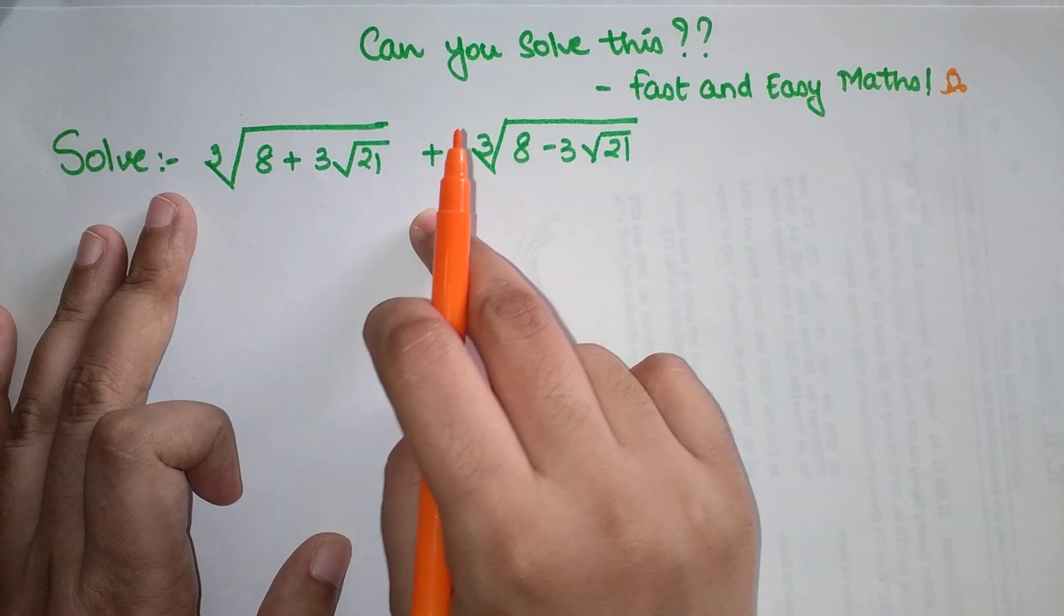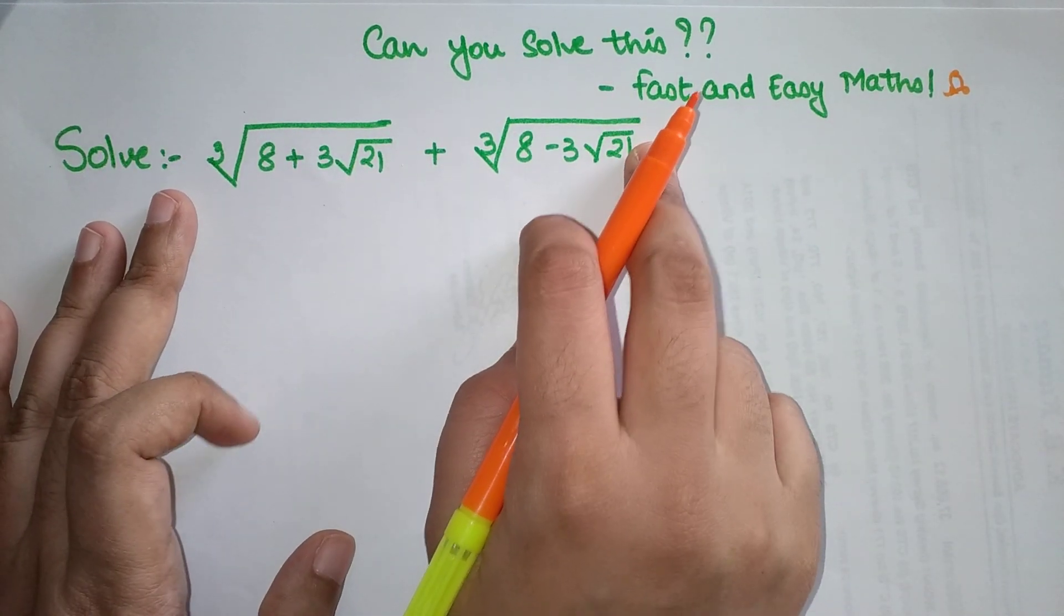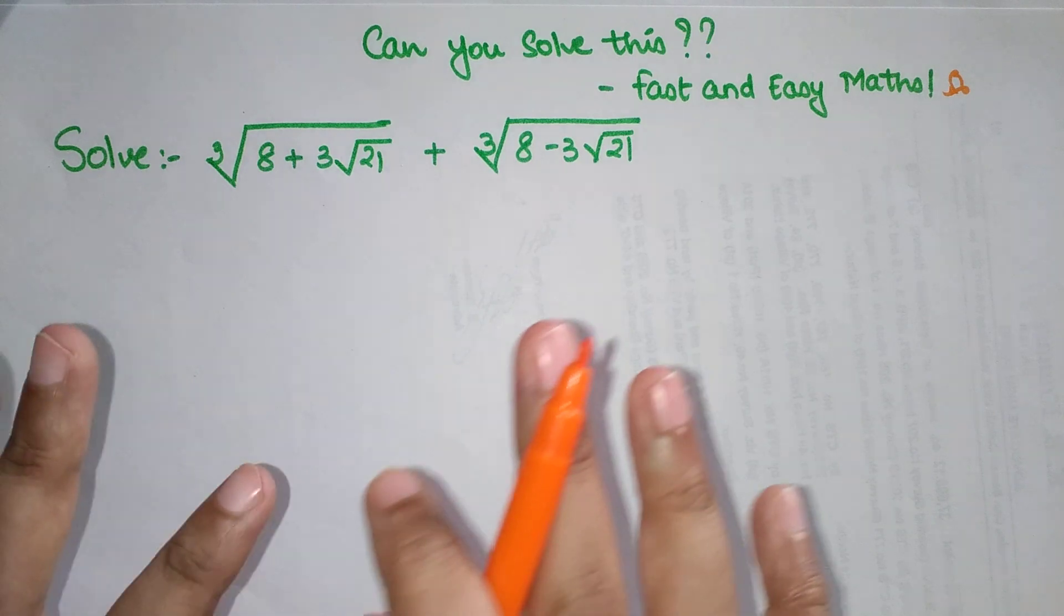The question says solve cube root of 8 plus 3 root 21 plus cube root of 8 minus 3 root 21.